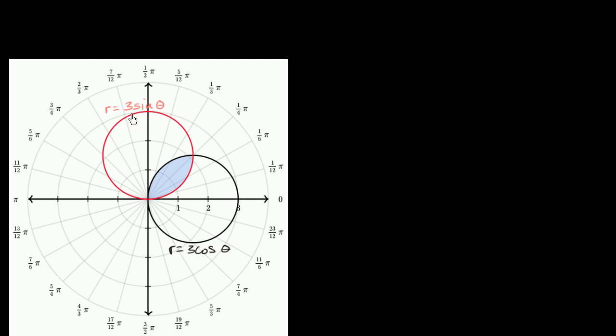We have two polar graphs here. R is equal to three sine theta and R is equal to three cosine theta. What we want to do is find the area shaded in blue, which is the overlap of these two circles. I encourage you to pause the video and give it a go.